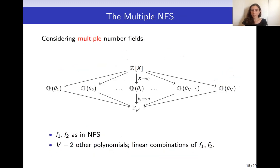One variant is called the Multiple NFS (MNFS). The multiple NFS simply considers more than two number fields, as in the classical NFS setup. We again have a commutative diagram where instead of two number fields we have multiple ones defined by polynomials. Two polynomials are chosen at the start, and the others are linear combinations of these two initial polynomials. This results in trade-offs in complexity, but overall the complexity is lowered using MNFS.